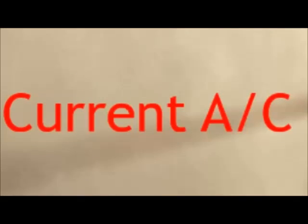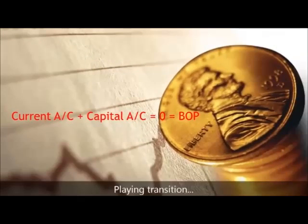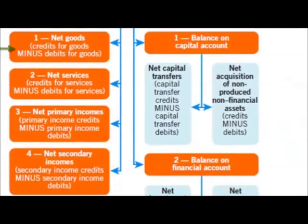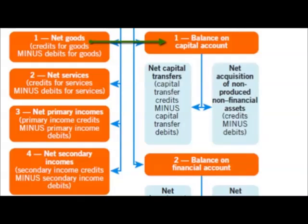So if we have a current account deficit, which is largely in a minus, we need a capital account in a positive. To summarise using this flow chart: the overall balance of payments must equal zero. The balance on current account — net goods plus net services giving the balance on goods and services, plus net primary income, plus secondary income — those non-reversible transactions must be balanced by the capital account's reversible transactions: transfers, loans, investments and so forth.